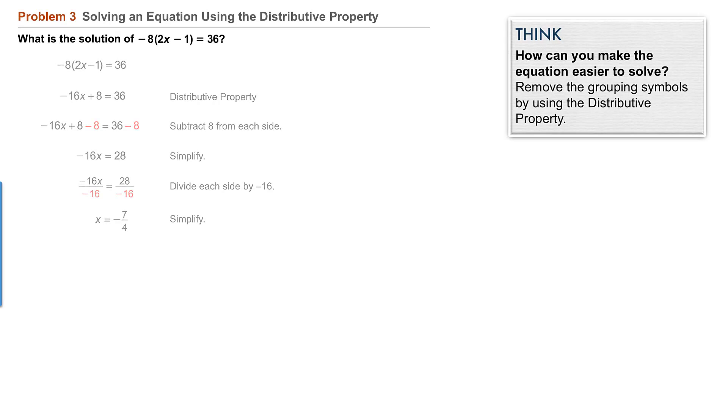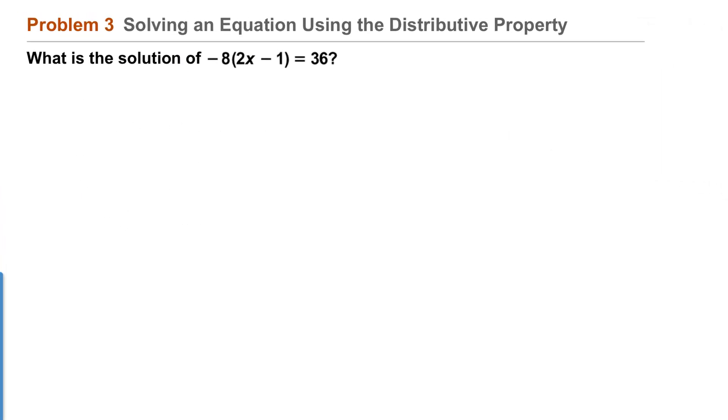Problem three: solving an equation using the distributive property. What is the solution of -8(2x - 1) = 36? First, rewrite the equation -8(2x - 1) = 36, and then use the distributive property.